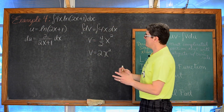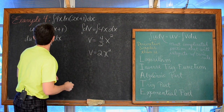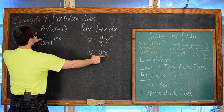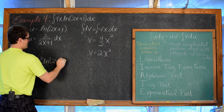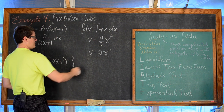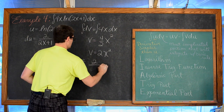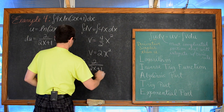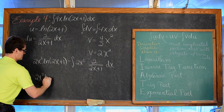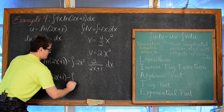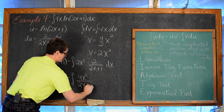Integrating dv = 4x dx gives v equals 2x squared. For du: the derivative of the natural log of u is u' over u, so if u equals natural log of (2x+1), then du equals 2 over (2x+1) dx, since the derivative of 2x+1 is 2. Now applying the integration by parts rule: uv minus integral of v du gives us 2x² times natural log(2x+1) minus the integral of 2x² times 2/(2x+1) dx, which simplifies to 4x²/(2x+1) dx.